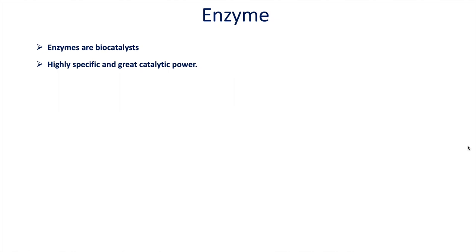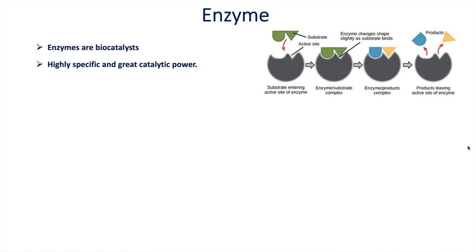Enzymes are highly specific and have great catalytic power. Enzymes have an active site, and the substrate that exactly matches the shape of the active site fits into the enzyme and is converted into product. If the substrate structure doesn't match the active site of the enzyme, it will not bind and will not give a product. That's why enzymes are highly specific for their reactivity toward substrate.